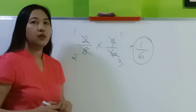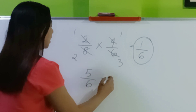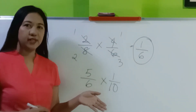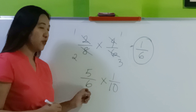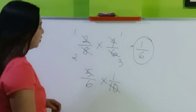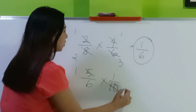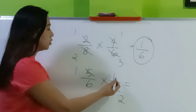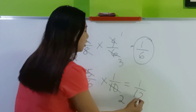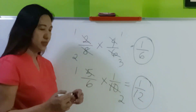But you cannot cancel all the time. For example, 5/6 times 1/10 — the only pair you can cancel out is 5 and 10. 5 divided by 5 is 1, 10 divided by 5 is 2. Then multiply: the result gives us the final answer. Can you still simplify that fraction? Not anymore.